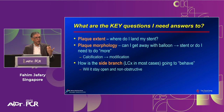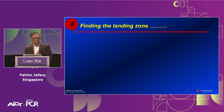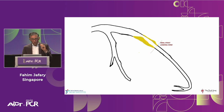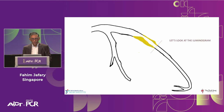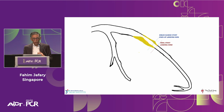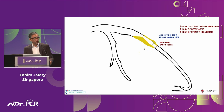Post-stent: did I do a good job? Regarding landing zone — when there is plaque, your landing zone should be somewhere beyond the plaque where it's relatively normal. These vessels are often remodeled, so the lumen may appear normal on angiogram. Without IVUS, you won't know whether there is plaque, and your stent will end in a zone of plaque — increasing the risk of stent under-expansion, restenosis, and stent thrombosis.